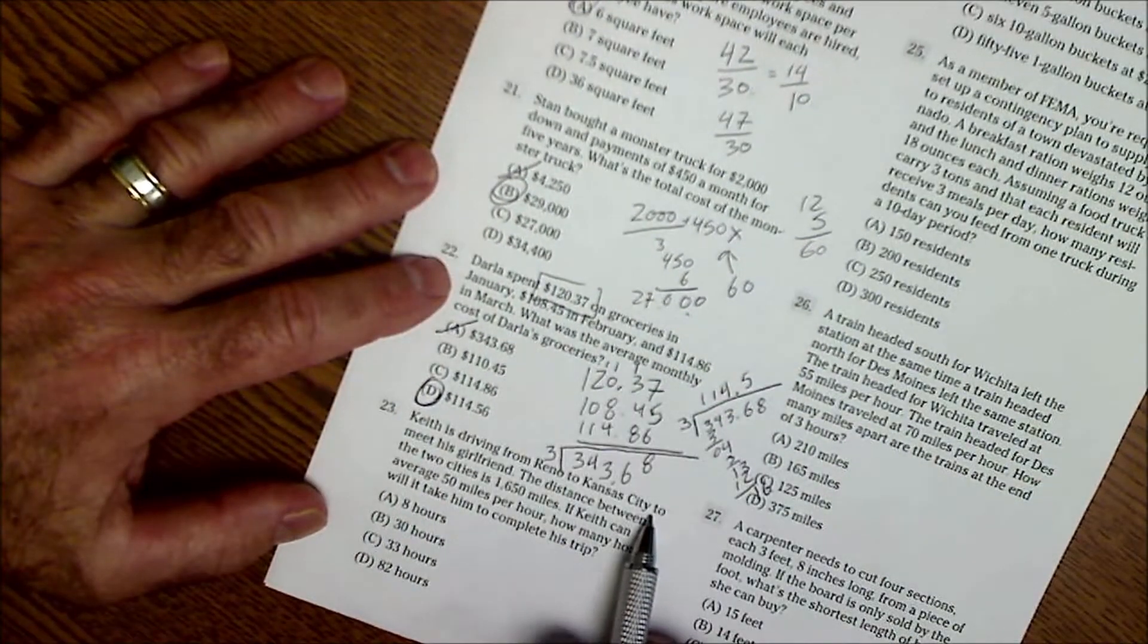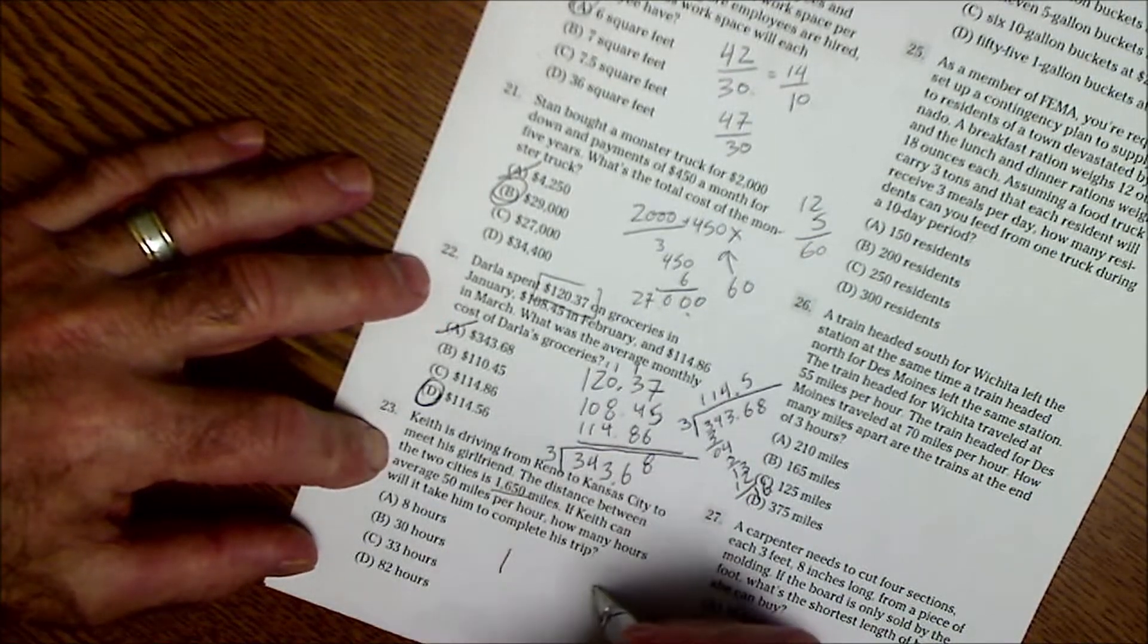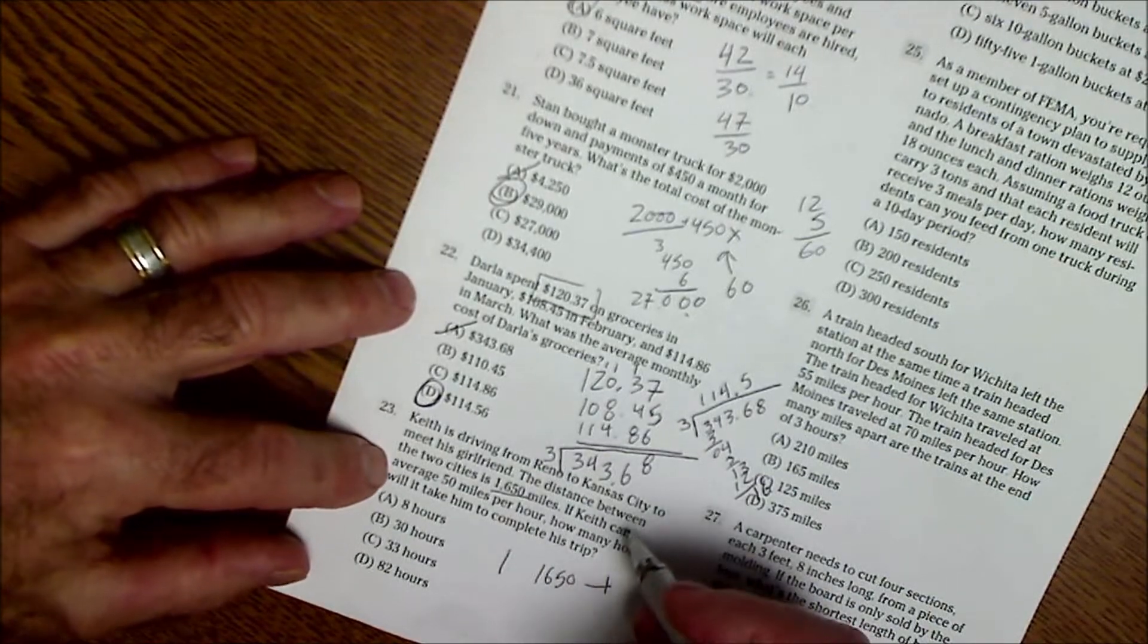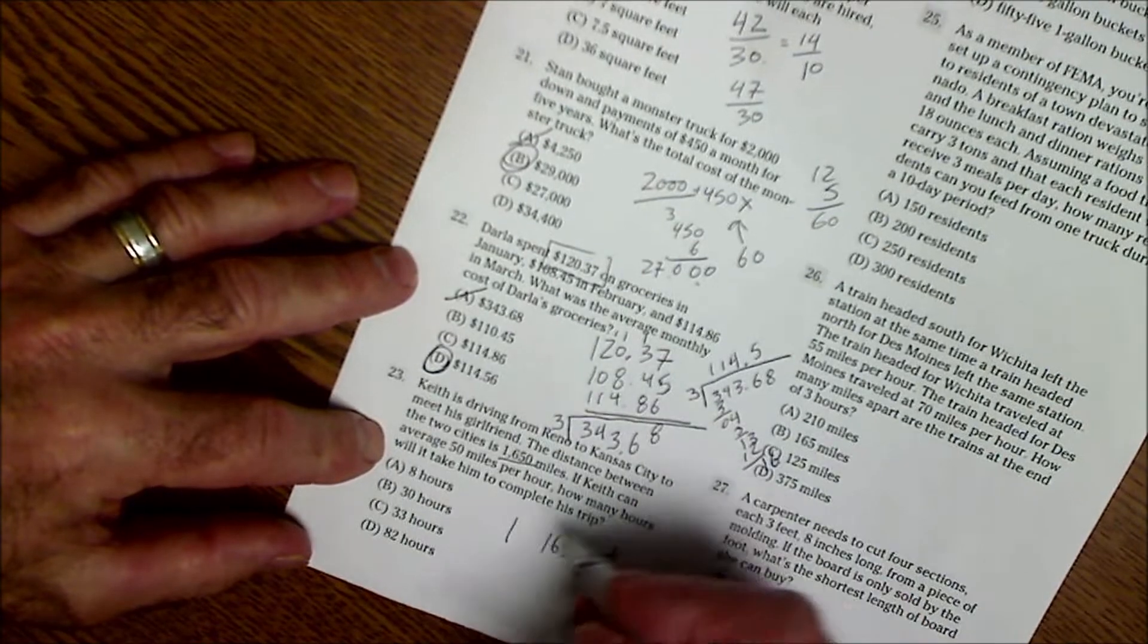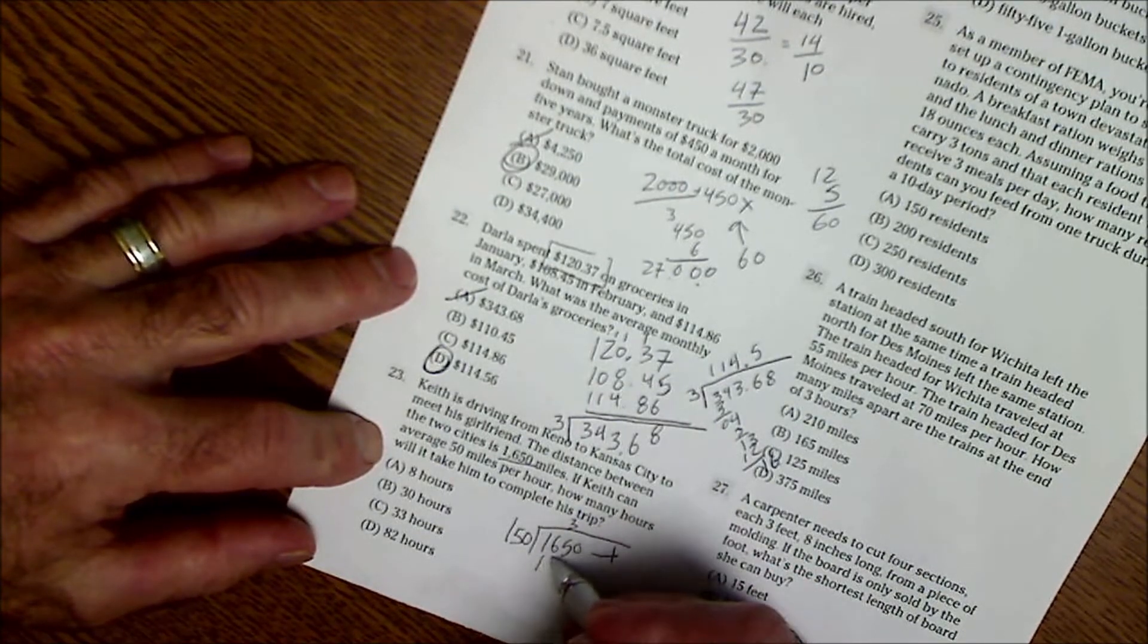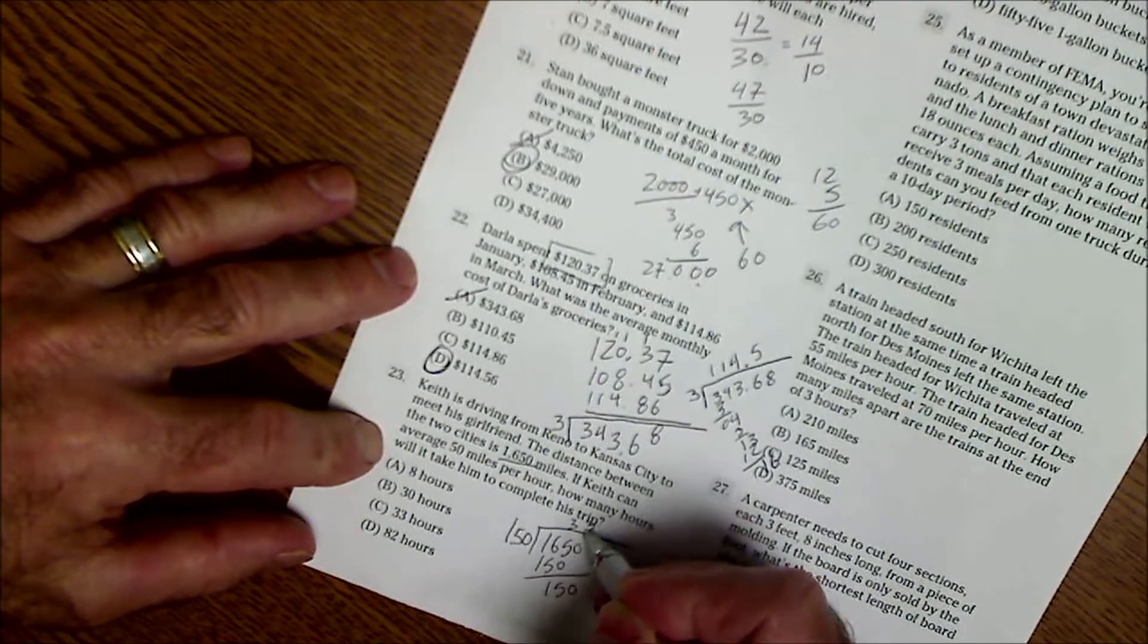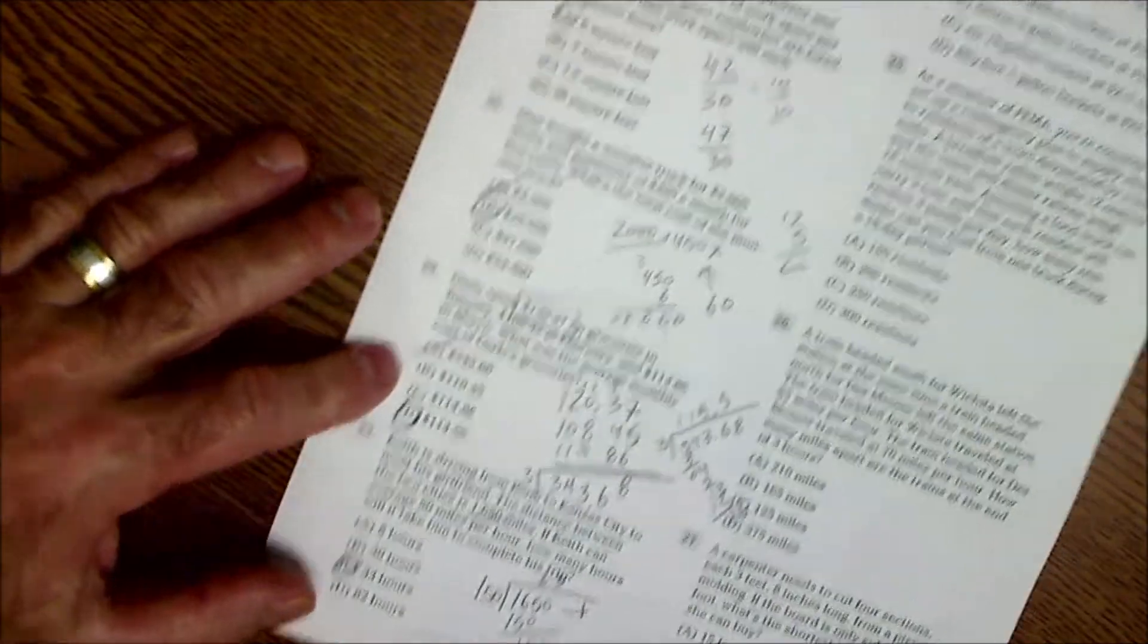He's driving from Reno to Kansas City. The difference between the two cities is 1650. You can average 50 miles per hour. How many hours will it take him to complete the trip? So that's just going to be 50 into 1650. It's going to go into 165 three times to give you 150. 150 again, 33. So it's going to be 33 hours. Answer C.